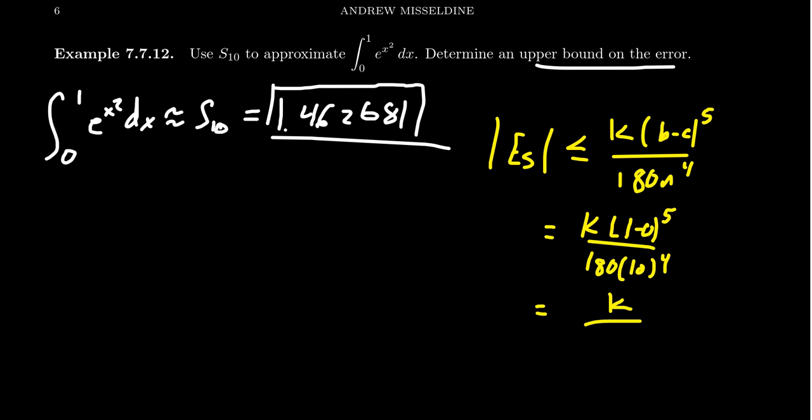Working with this, we're going to get k on top. We're going to get 180 and then 10 to the fourth. That's just going to give you 10 more zeros to concatenate on the bottom there, so you get 1.8 million on the bottom. So how do we determine this k value? Remember, k is supposed to be a bound on the fourth derivative of this function on the interval 0 to 1.